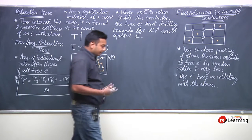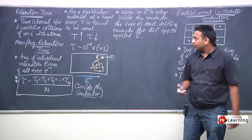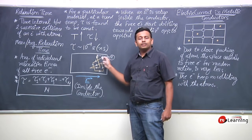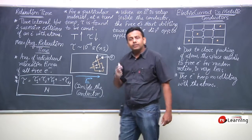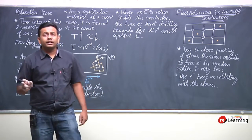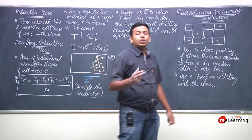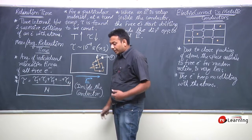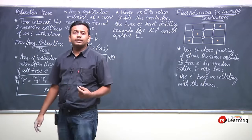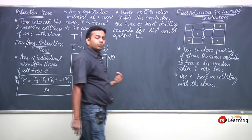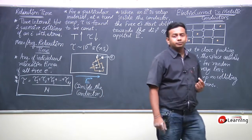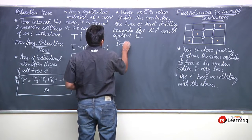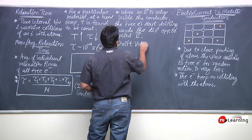Now we will be interested in finding the speed or velocity with which these electrons drift. We want to find this speed because the flow of charges is electric current, and we want to determine at what rate or speed this happens. So we will be conceptualizing the drift velocity or drift speed.